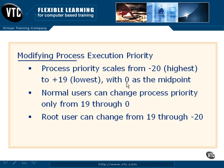Unless you have root access to your system, you're only going to be able to lower the priority from zero back to 19. Normal users would have to use the sudo command to actually bump up to root to change priorities up in value. Once you do have root privileges, you have the entire range at your fingertips.